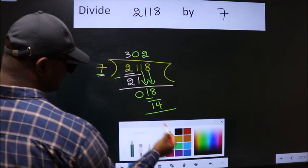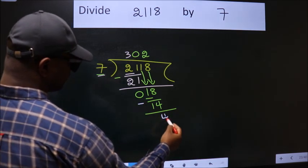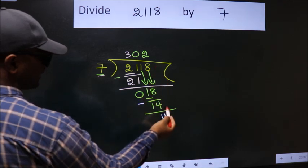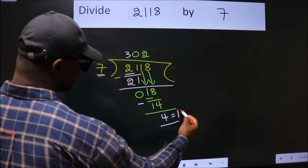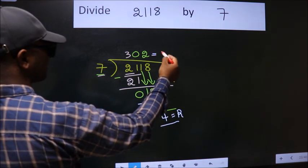So we subtract. We get 4. No more numbers to bring it down. So we stop here. This is our remainder. This is our quotient.